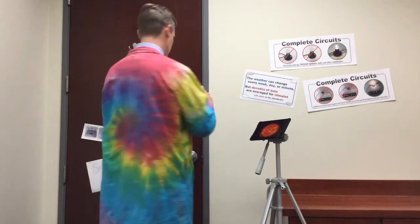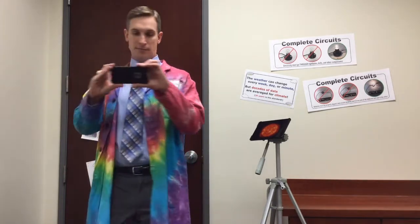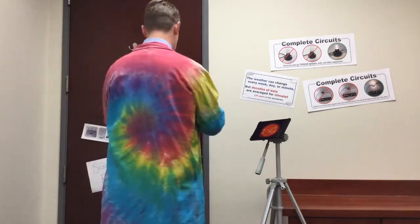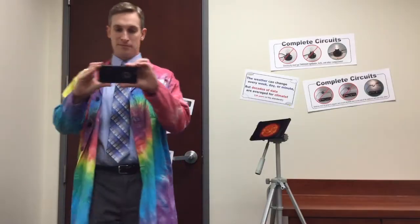Well, it turns out the answer is really pretty simple. I was able to make the Sun appear like it was moving across the screen simply by rotating in place while I filmed it. That rotation made the Sun appear to move across the screen, even though the Sun wasn't moving at all.